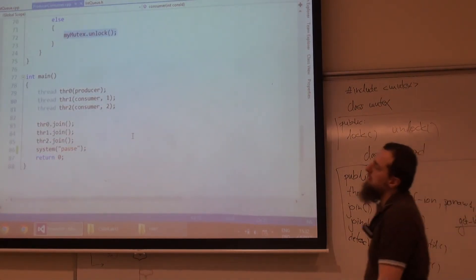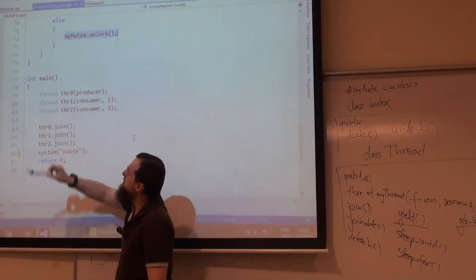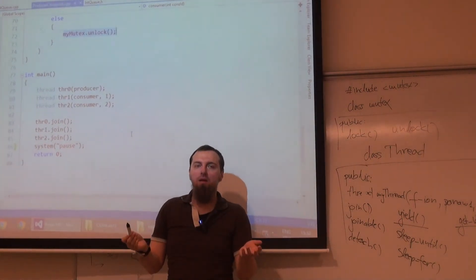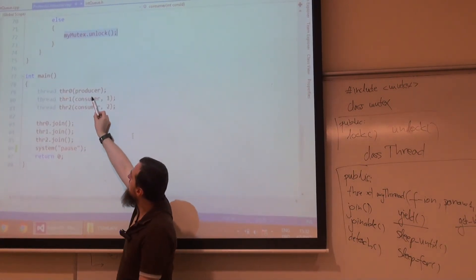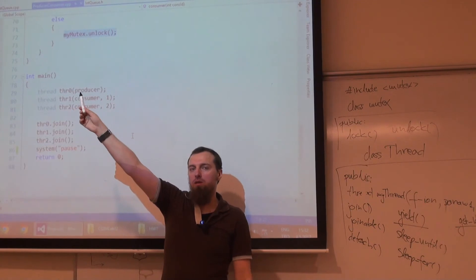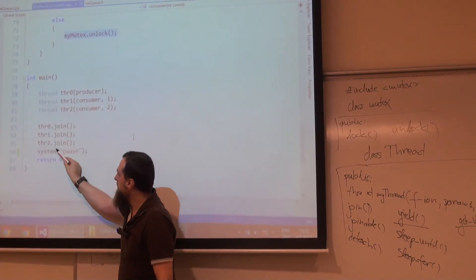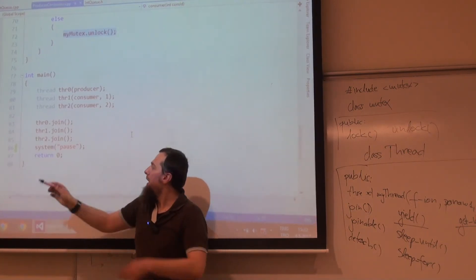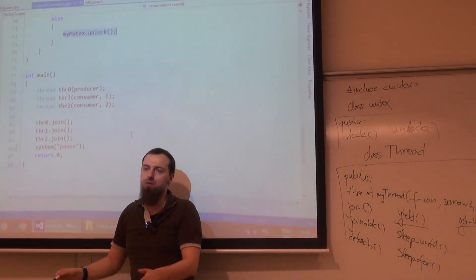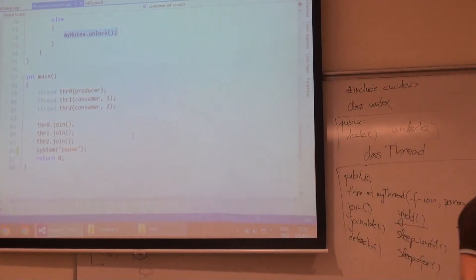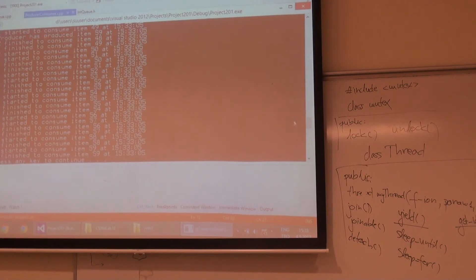This is the main function. We have three threads, the producer. Producer doesn't take any parameters because we have one. The consumer, you remember, it takes an ID of the consumer, consumer one, consumer two. We join all of them. And when those threads are finished, then main is finished. And this is it. Let me run it again. And this is it. You see.